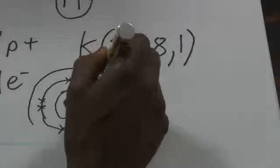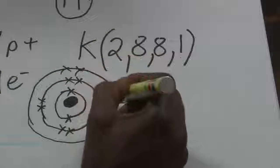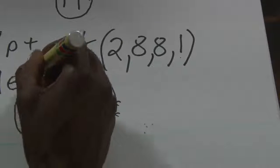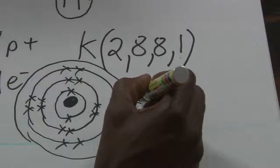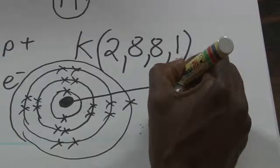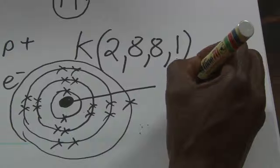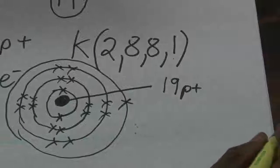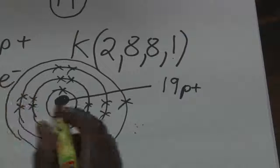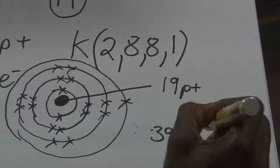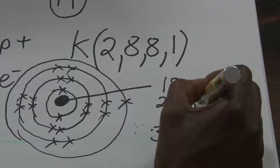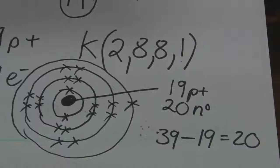Then we draw the third shell that has eight electrons, and then of course the very last shell has one electron. Inside the nucleus there are 19 protons. To get the neutron number, we say 39 take away 19, we get 20. Inside there are 20 neutrons. So that's an atom of potassium.